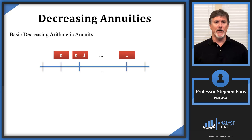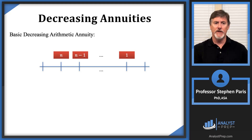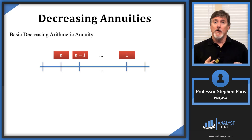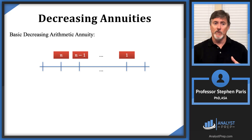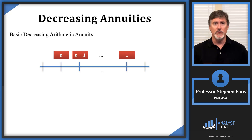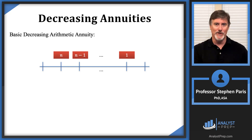We're going to look at different valuation dates and look at the symbols that are used to represent the value of the annuity at these different valuation dates. The arithmetic annuities have symbols for these values that you're expected to know. Unlike the geometric annuities, there's no symbol for the values at different valuation dates for geometric annuities, but for arithmetic annuities we do have these symbols.